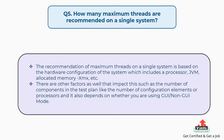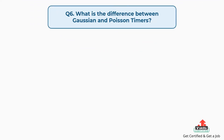Question 5: How many maximum threads are recommended on a single system? The recommendation for maximum threads on a single system is based on the hardware configuration, which includes processor, JVM allocated memory (Xmx), etc. Other factors include the number of components in the test plan such as configuration elements or processors, and whether you are using GUI or non-GUI mode.